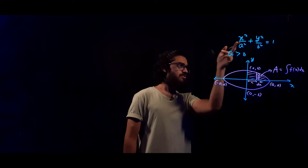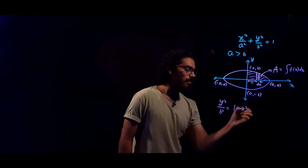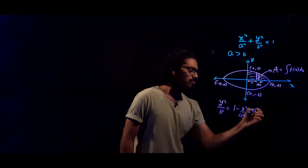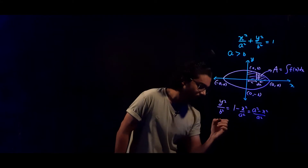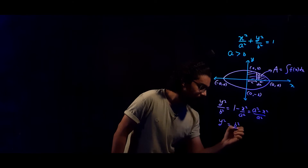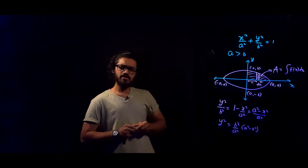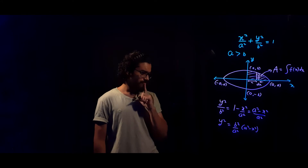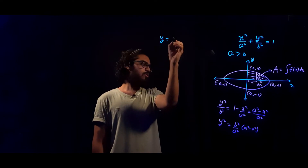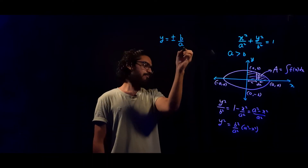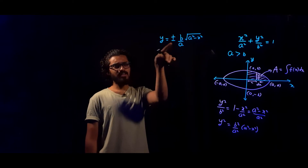From the ellipse equation, y²/b² = 1 − x²/a², which is (a² − x²)/a². So y² = (b²/a²)(a² − x²). Taking the square root, y = ±(b/a)√(a² − x²).